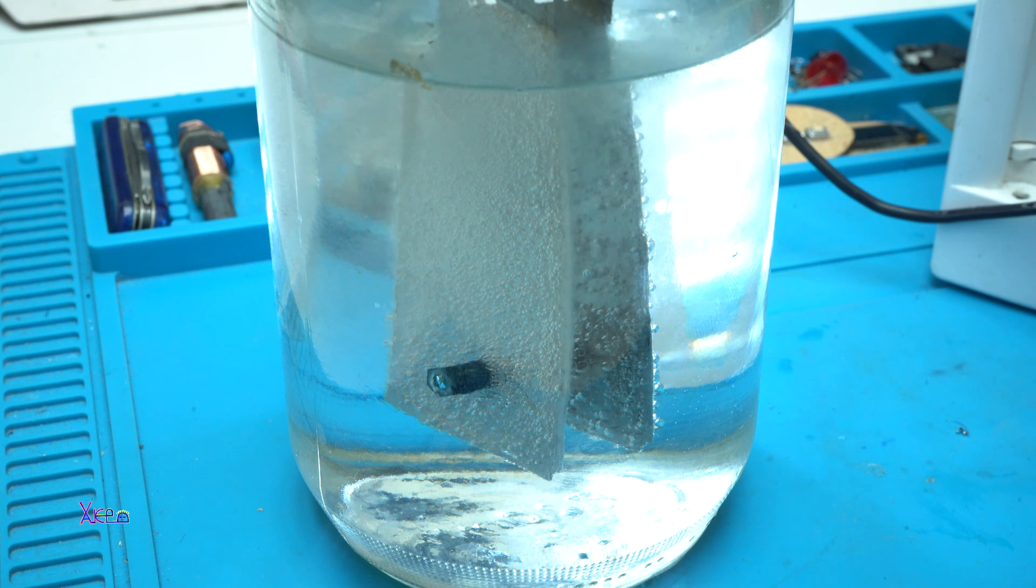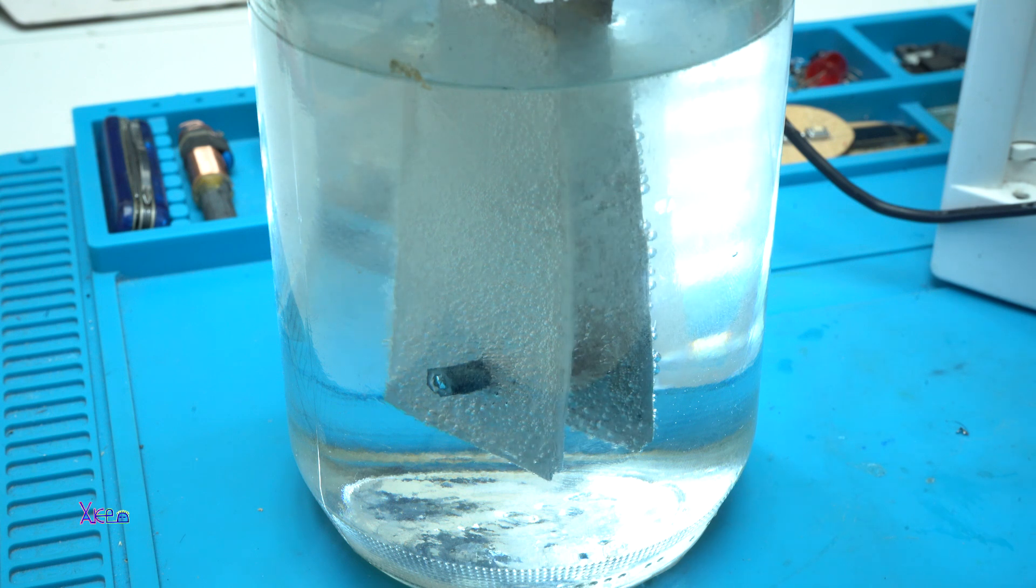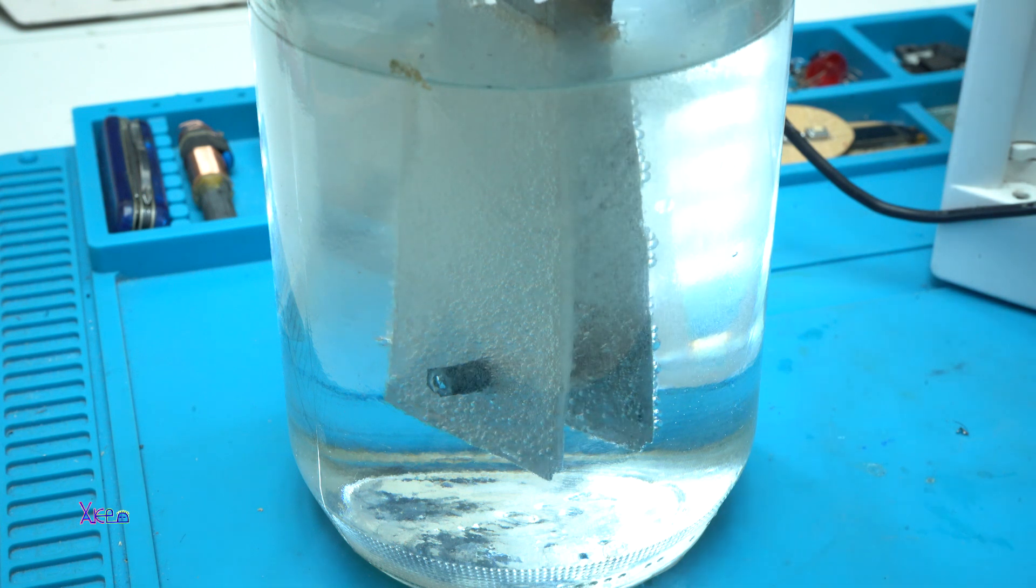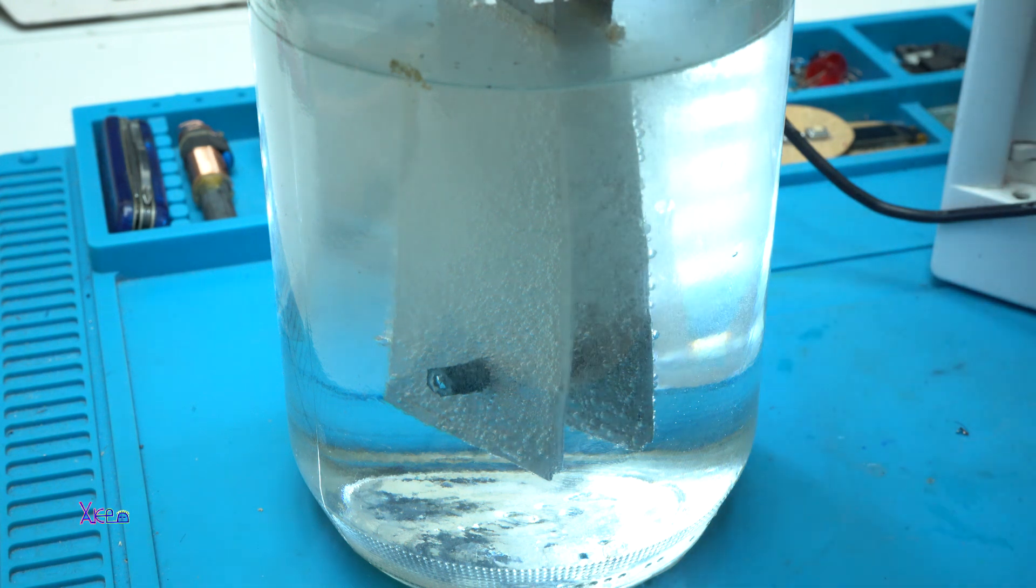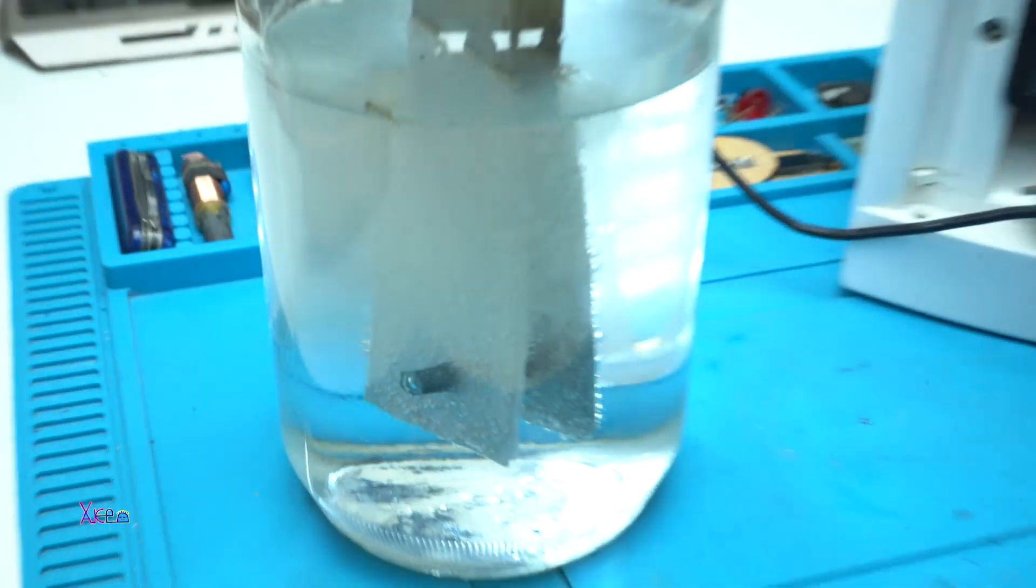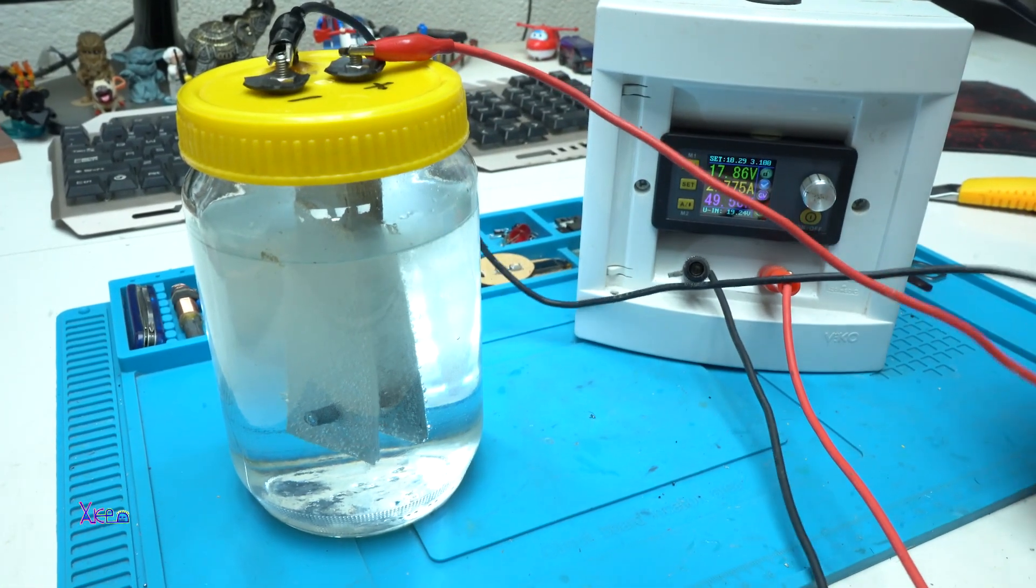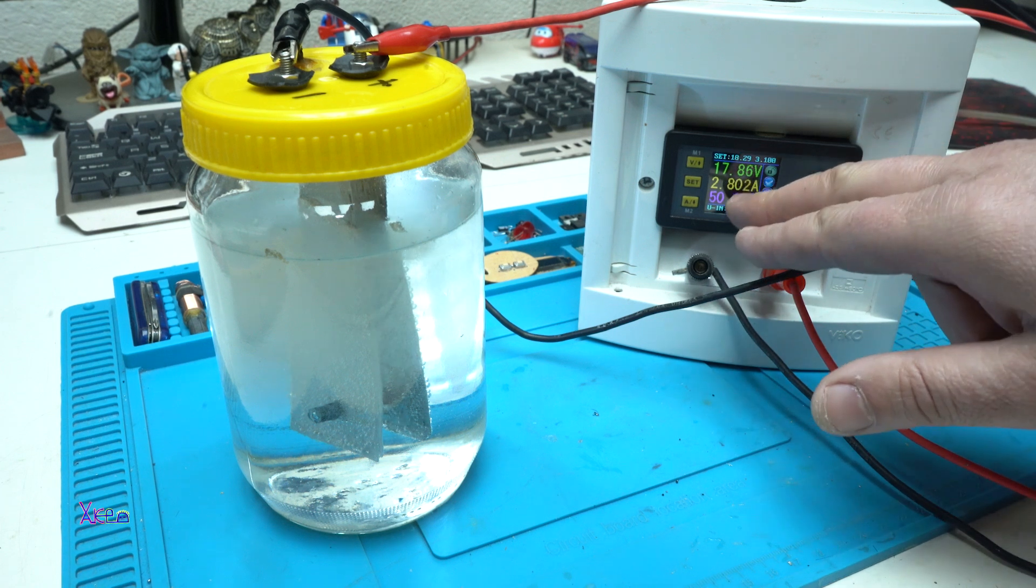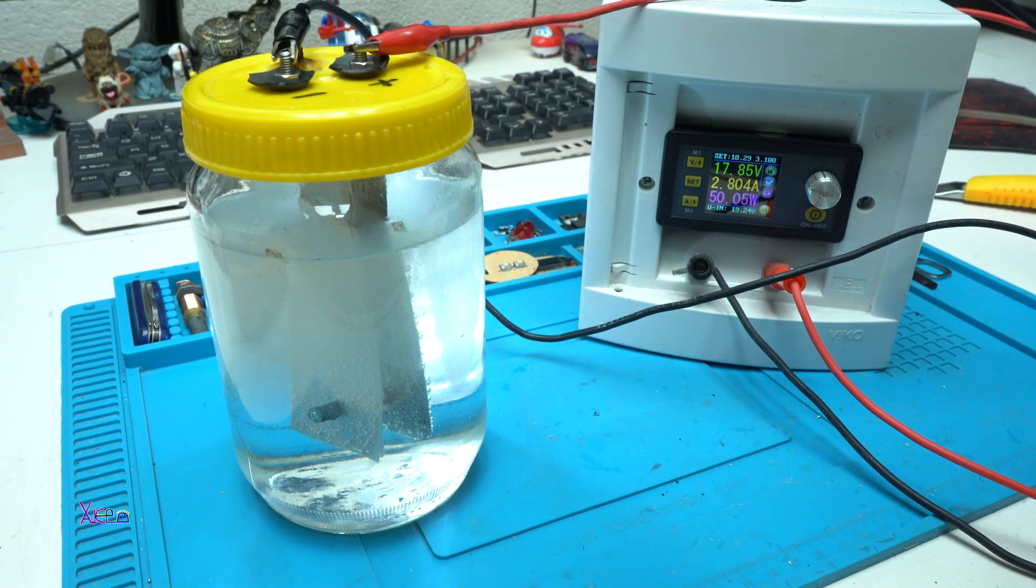With electrolysis of water with baking soda. Or other name is separating the water. It's working great. And right now it's pulling 2.8 amps at 17 volts. That means above or around 40 watts of energy.